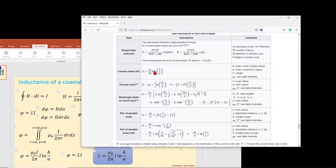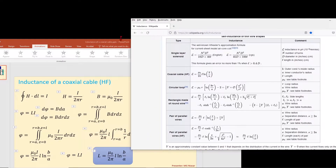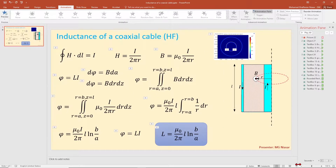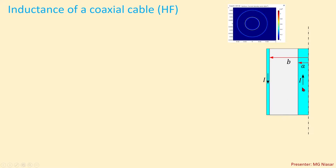Proving this analytical formula is very simple. For the sake of documentation I'm going to show you this proof and then we do the modeling. Let us assume that we have a coaxial cable. This is the axisymmetry line. The current i flows through the inner conductor and a current i returns from the outer conductor. At very high frequency the current flows on the surface of the inner conductor, and for the outer conductor the current flows on the inner surface.